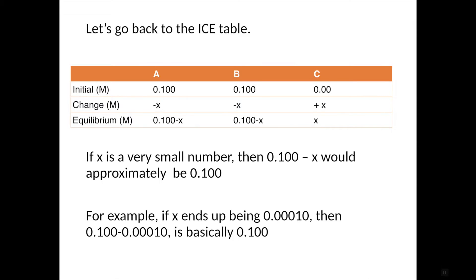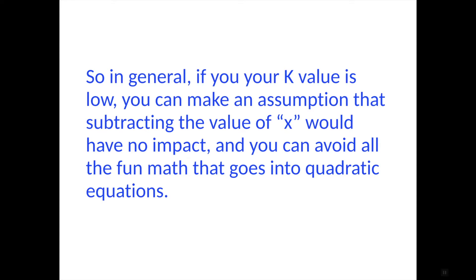So let me just go back to this ICE table. This is what we had before. So if X is very small, then we assume it's 0.1. Let's give some numbers to that. If we end up figuring out that X is 0.00010, which I hope you agree with me is a small number, then 0.100 minus 0.00010 is basically 0.100. Even in terms of significant digits, that would just be the same as if there was no change to the initial concentrations. In general, if your K value is low, you can make an assumption that subtracting the value of X would have no impact and you can avoid all the fun math that goes into quadratic equations.